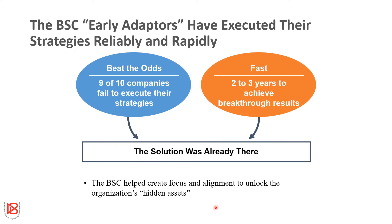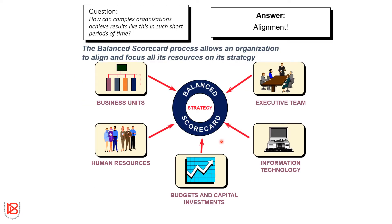Early BSC adopters have executed strategies reliably and rapidly. When nine out of ten companies fail to execute strategies, we need a solution. The Balanced Scorecard helps create focus and alignment to unlock the organization's hidden assets. The BSC process allows an organization to align all its resources — the executive team, IT, budgets, capital investment, human resources, and business units — to its strategies.